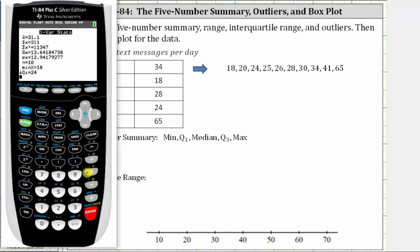From this screen, we can determine the five-number summary by scrolling down. And now we can see the five-number summary, which is the minimum, quartile one, the median, quartile three, and the maximum. Let's go ahead and record this.